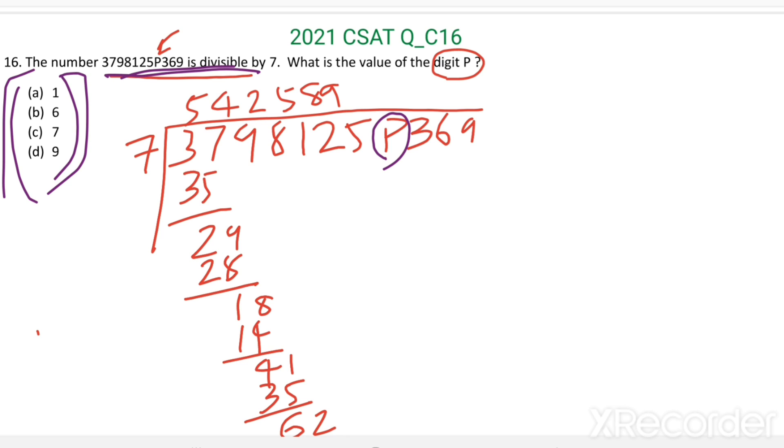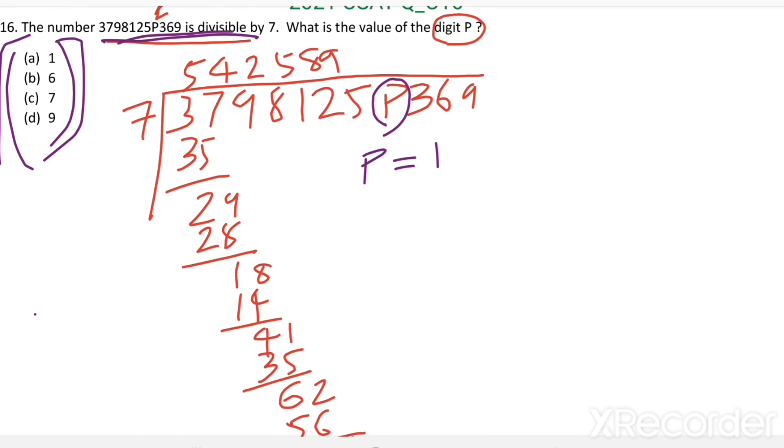First put P equal to 1. Then 2P become 2 into 2, 1. In 21, how many 7s are there? 3. 3 7s are 21.